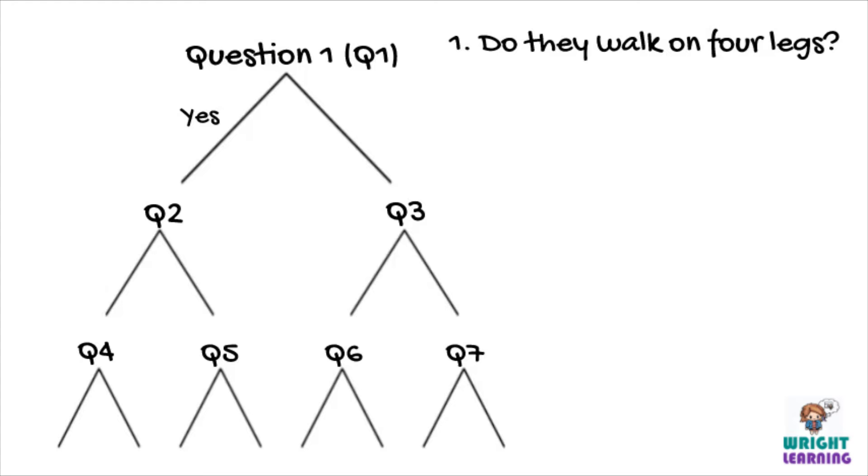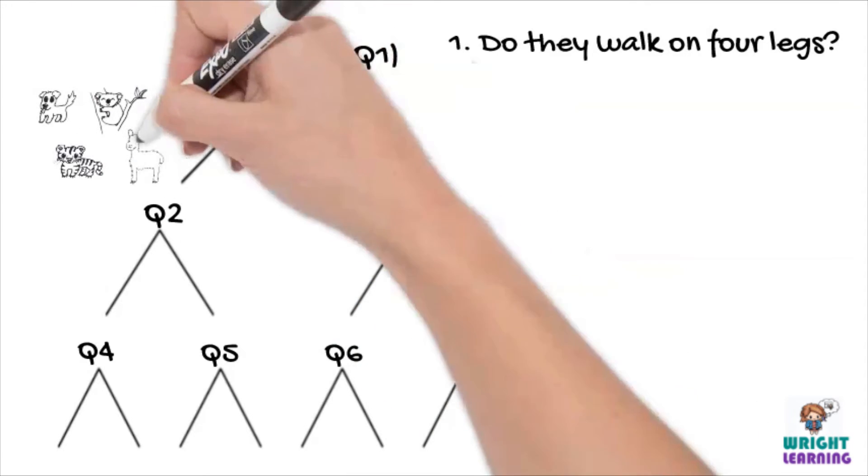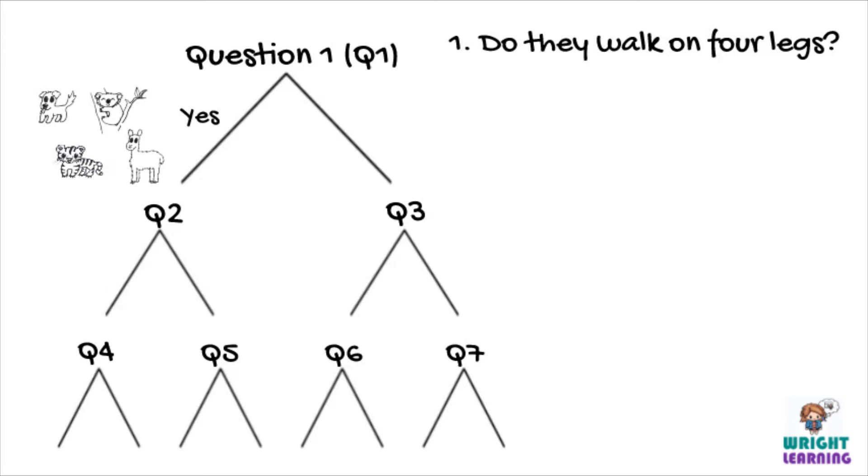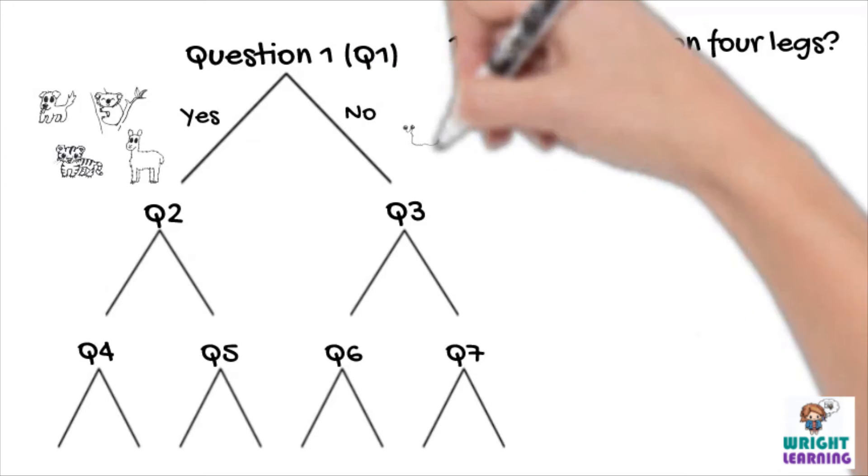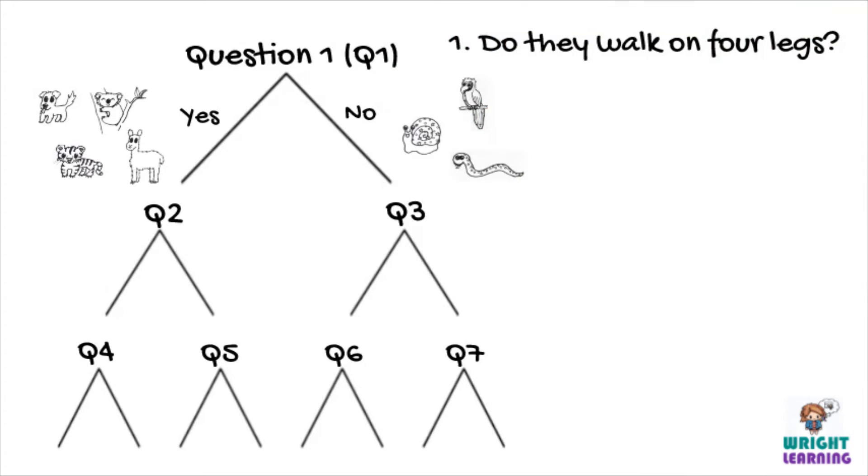The organisms that do walk on four legs are the dog, koala, tiger, and the alpaca. And those that don't are the snail, macaw, snake, and kangaroo.